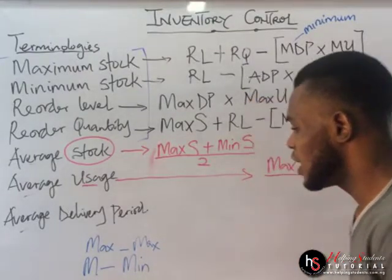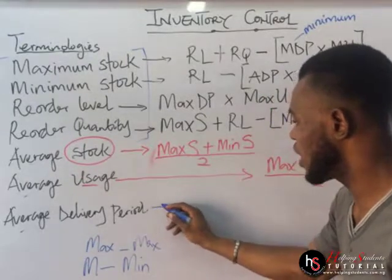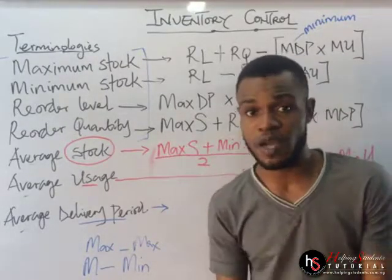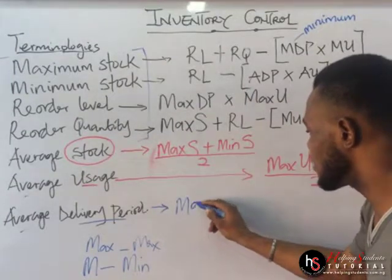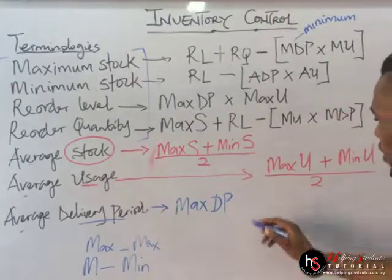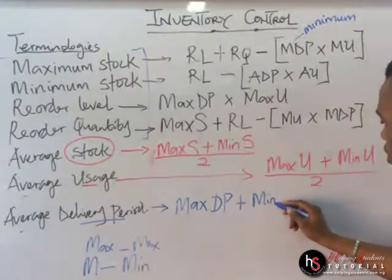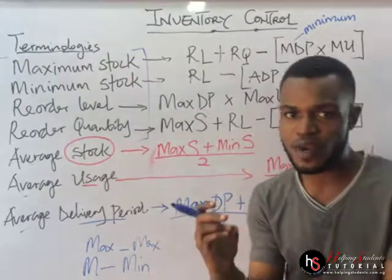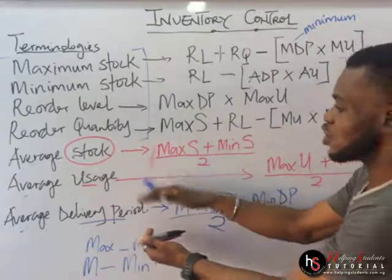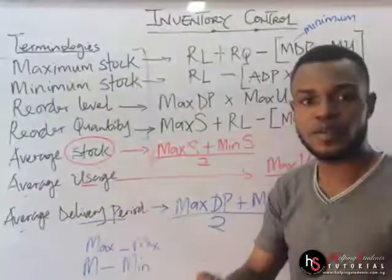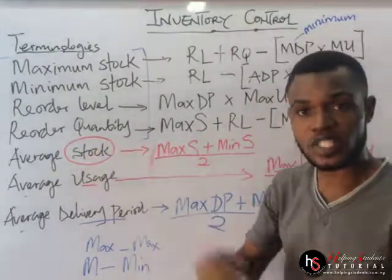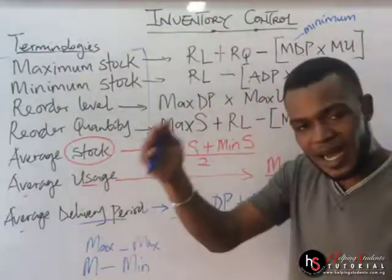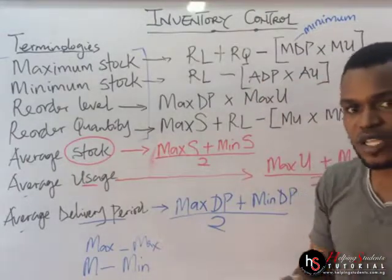The last formula is average delivery period. Remember, delivery period, lead time, and delivery time all refer to the same thing. The formula is: maximum delivery period plus minimum delivery period divided by two. This is why I said the major formulas to focus on are the first four — because for any average, it is simply maximum plus minimum divided by two.